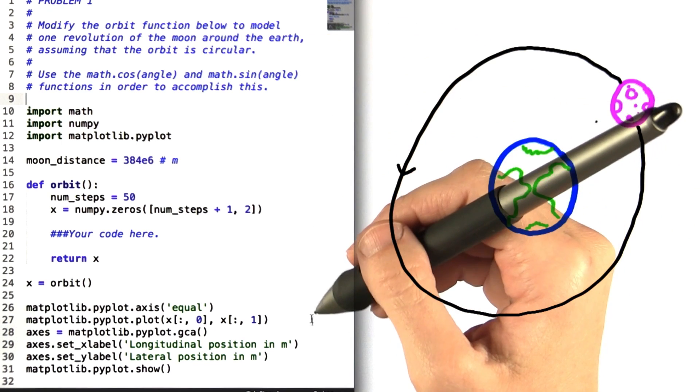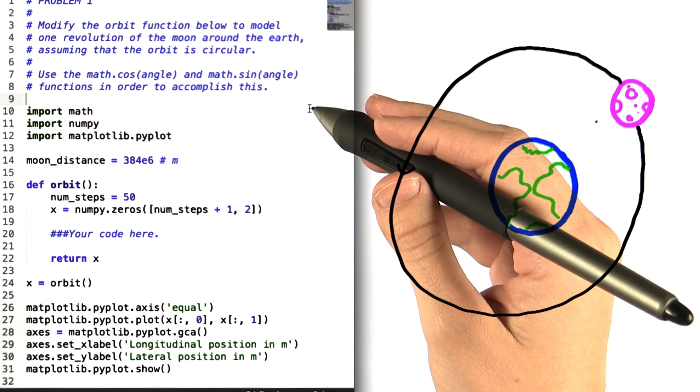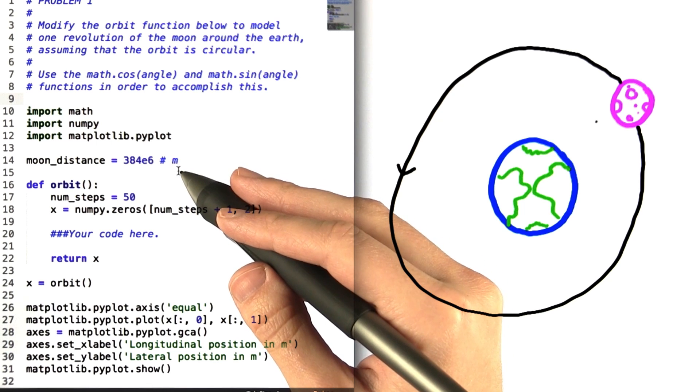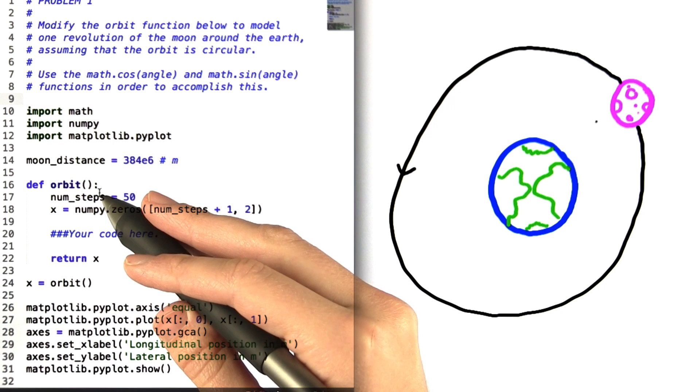So if you look over at the supplied code right here, you can see that we've helped you out with some pretty important parts of the code already. We've already told you that the moon's distance from the earth is 384 million meters. And we've also defined a function called orbit for you.